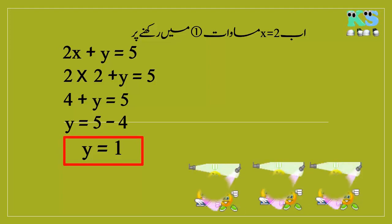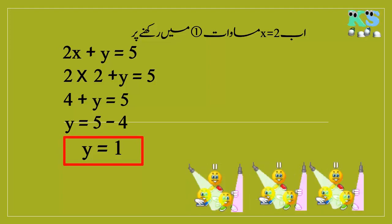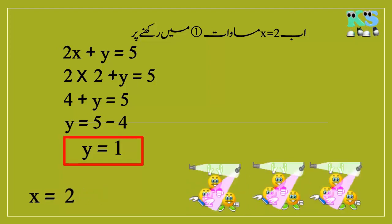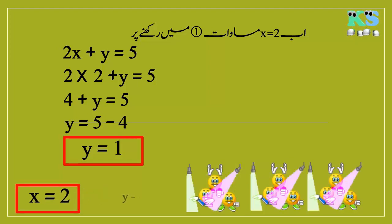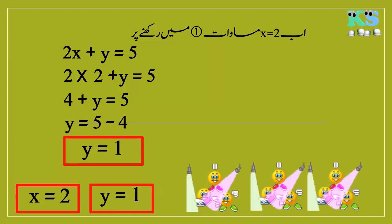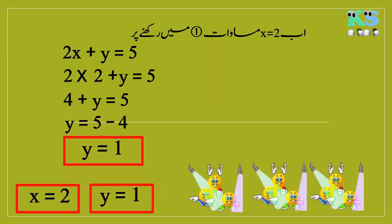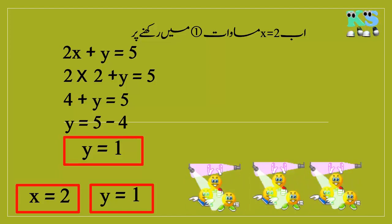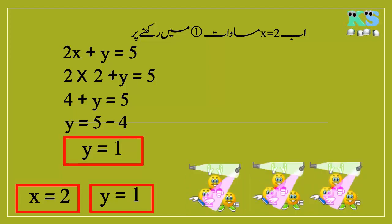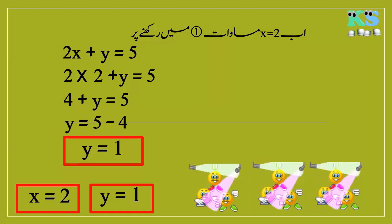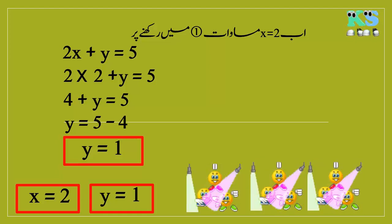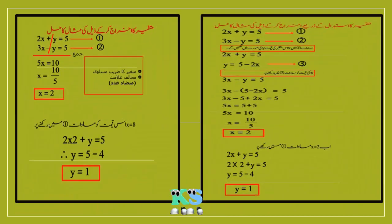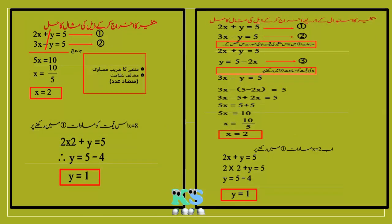5 minus 4 equal to 1، تو Y کی قیمت 1 حاصل ہوئی۔ Y equal to 1۔